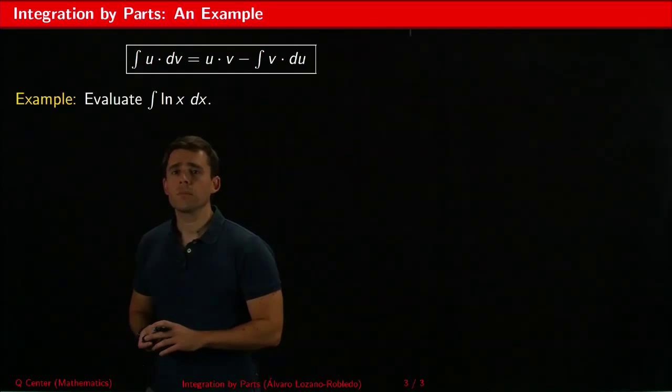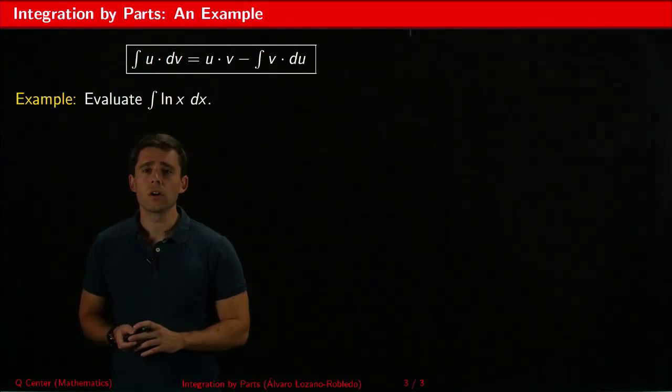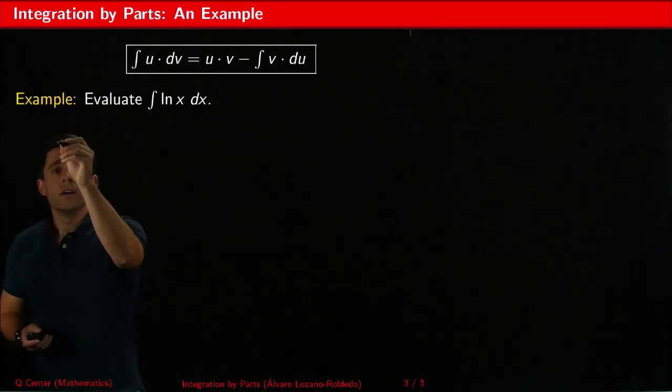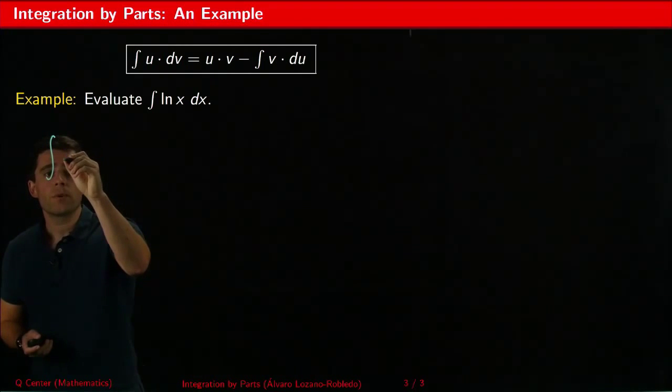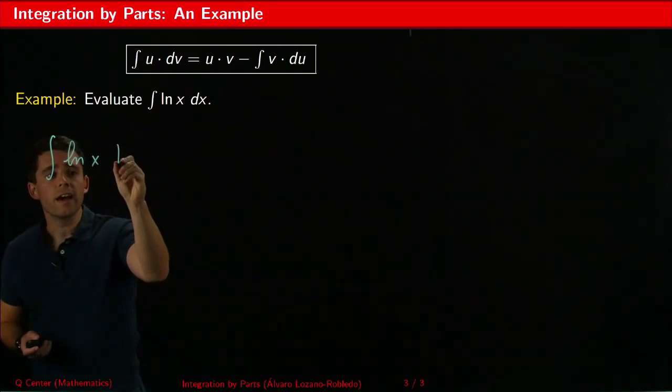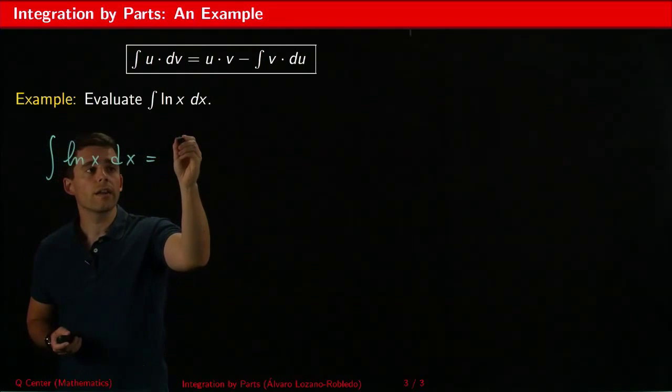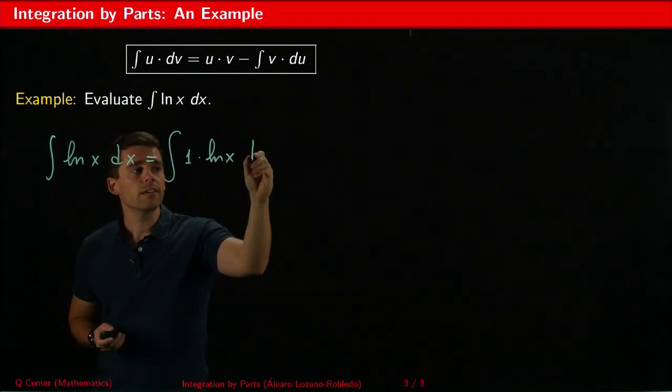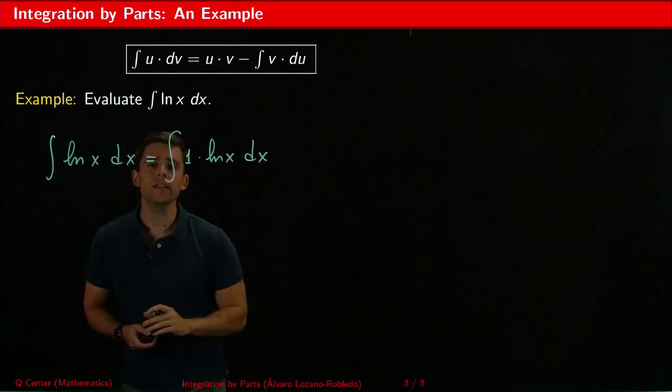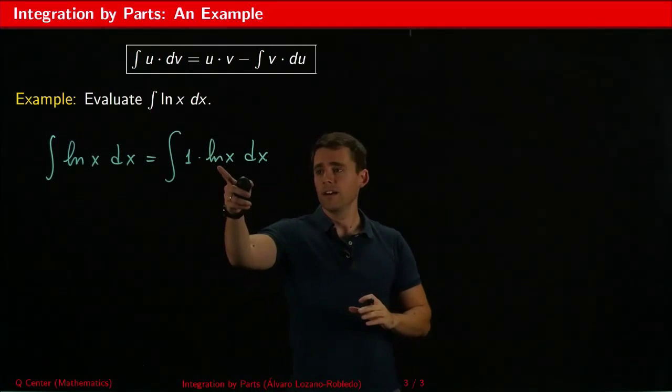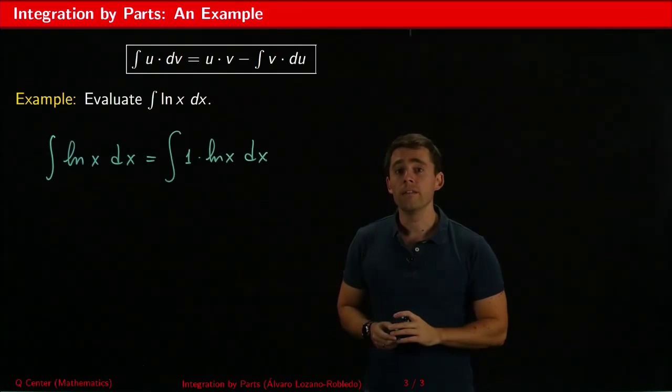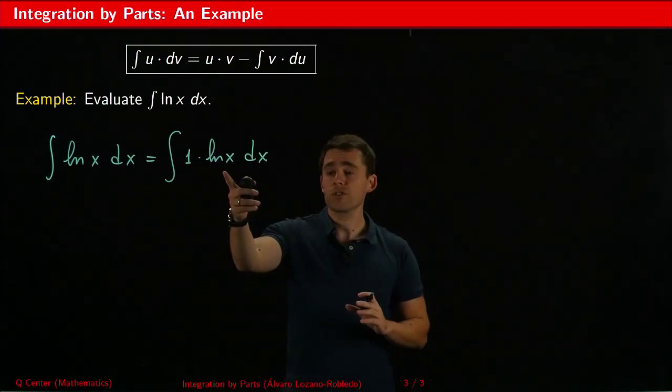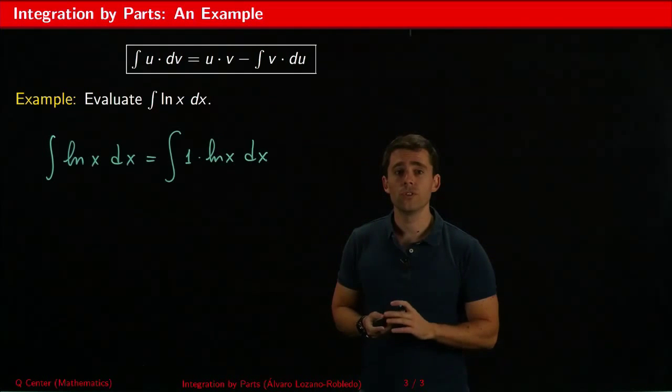So how are we going to make this look like something where we can apply integration by parts? Well, that's not a problem because ln x dx, we can write it as 1 times ln x dx. And now we see a function 1 that is easy to integrate and a function ln x that is easy to differentiate.